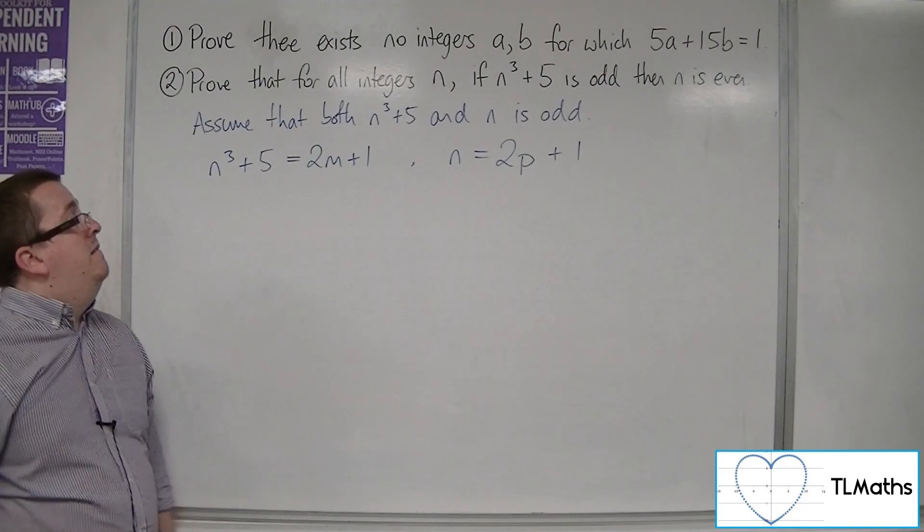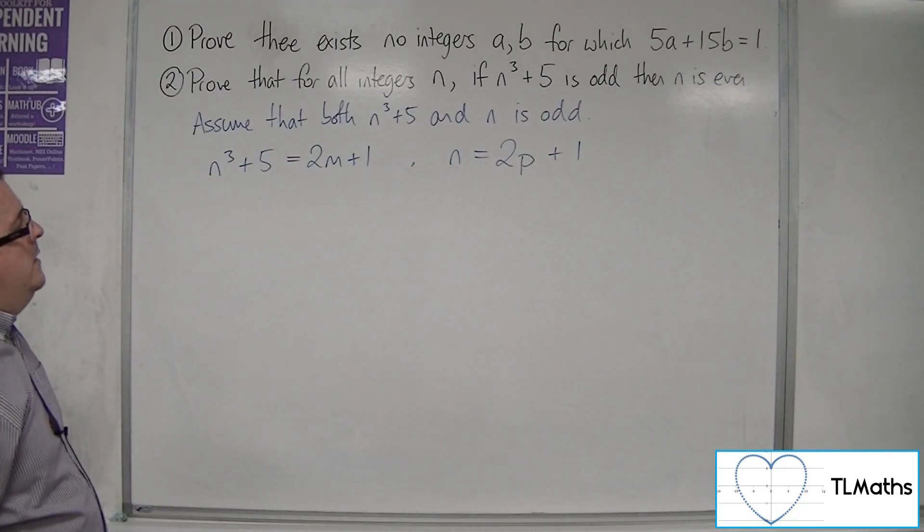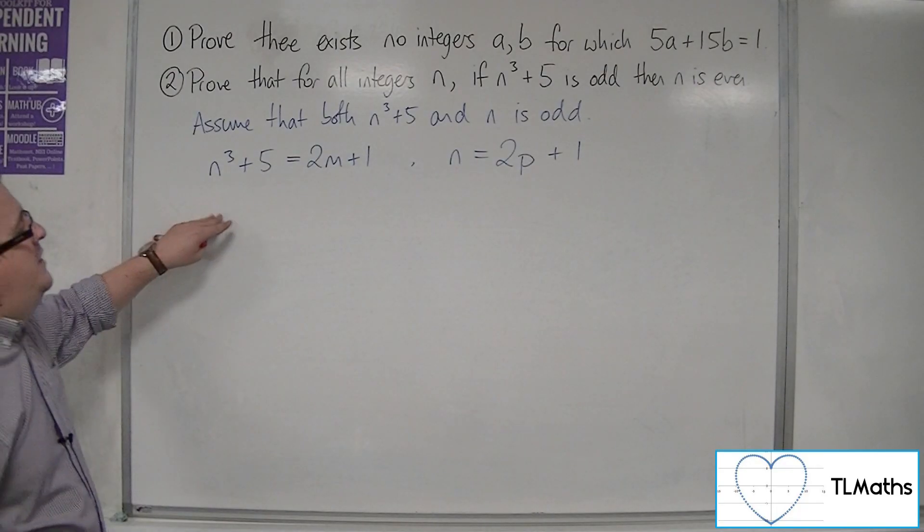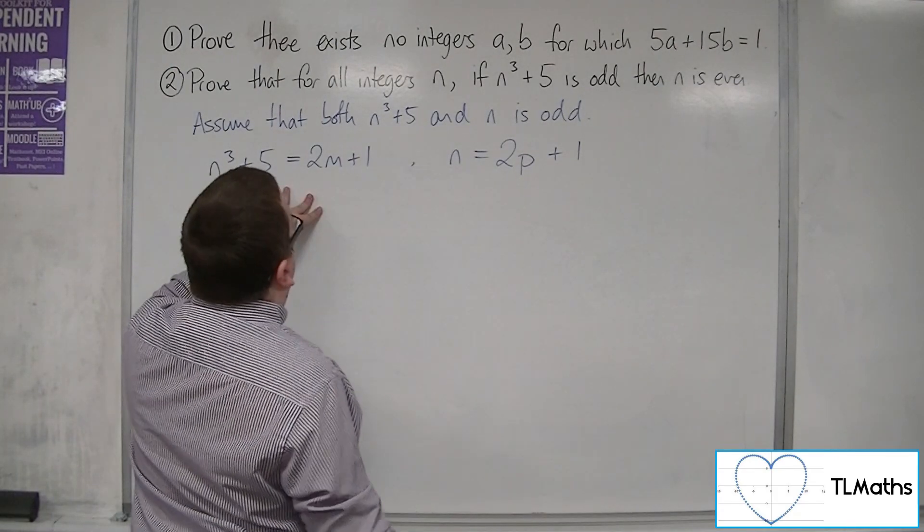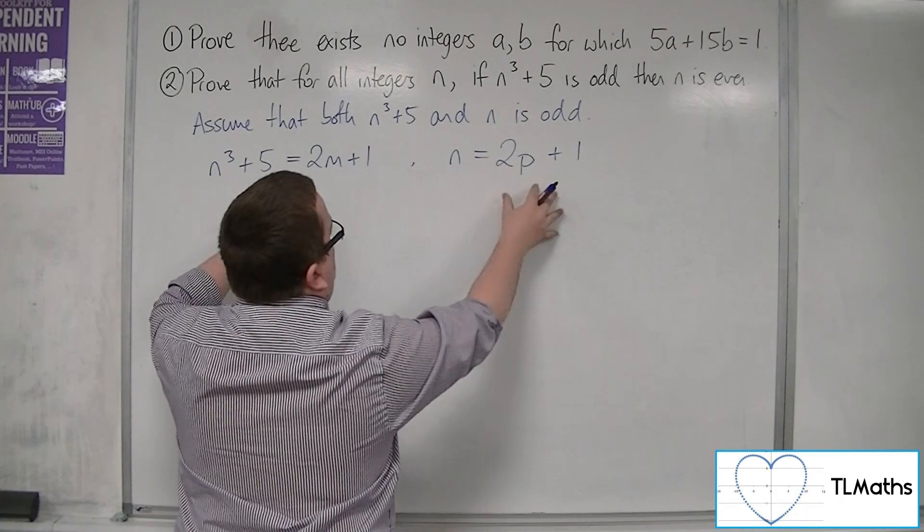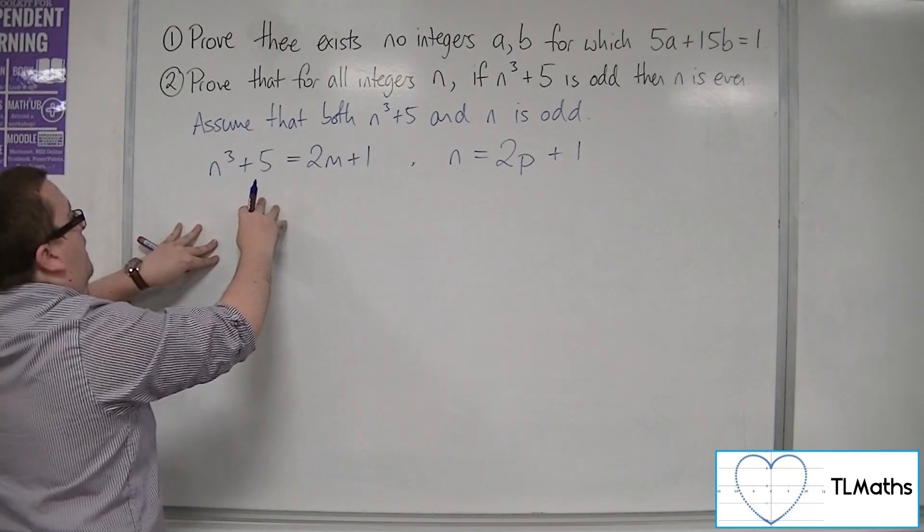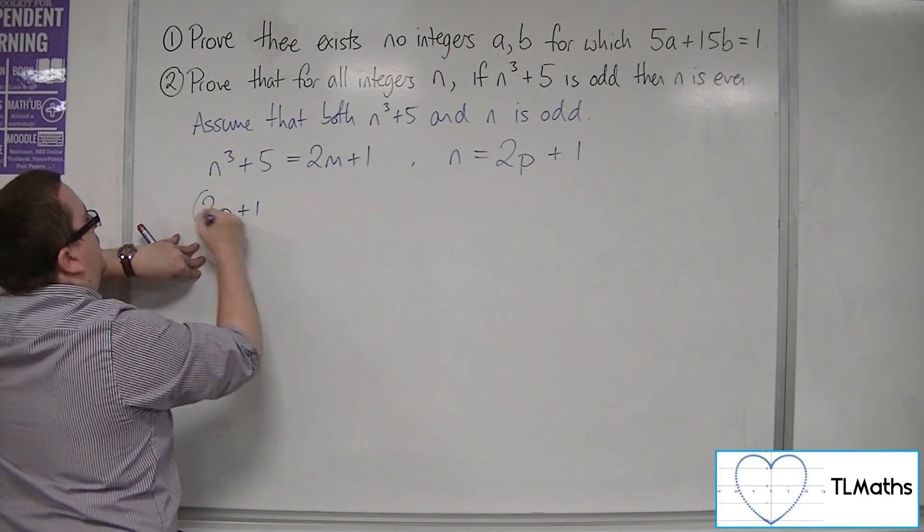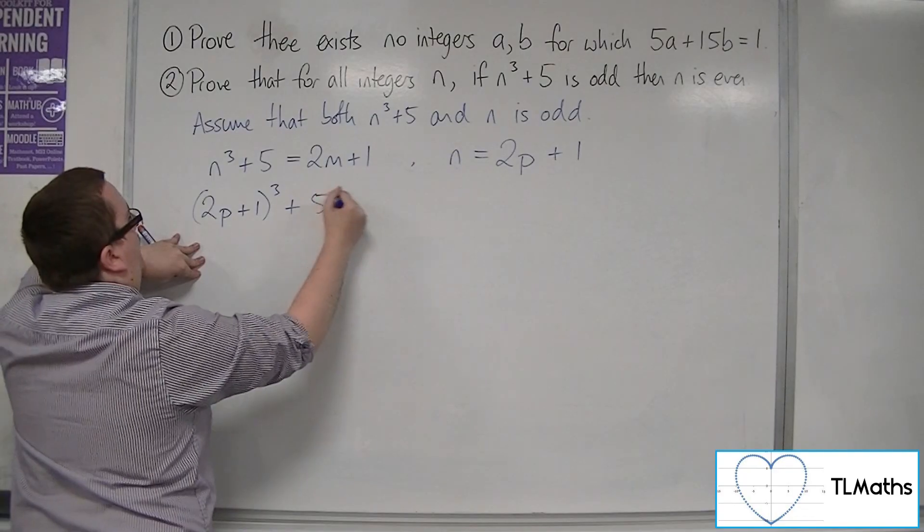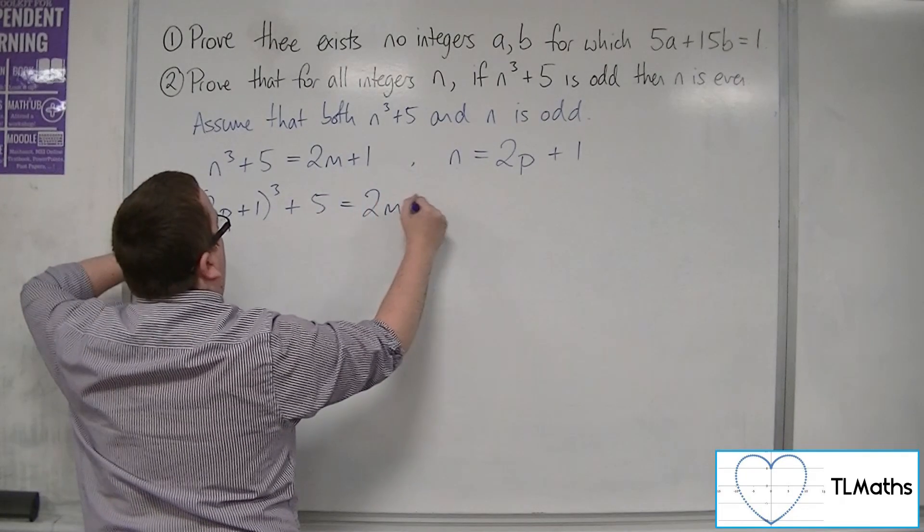I can't use n again. So if this is the case, I could substitute n is 2p plus 1 into that, and I get 2p plus 1 cubed plus 5 is equal to 2m plus 1.